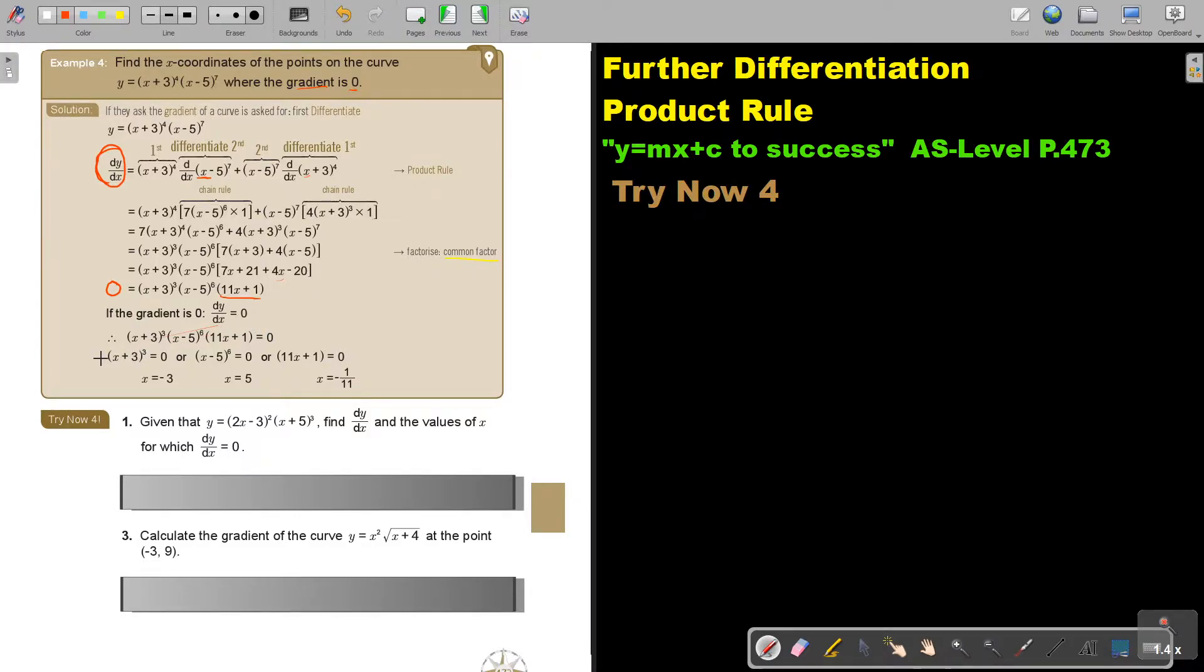If I want to get rid of the 3, I can just take the cube root. But at the end, I end up with x plus 3 equals 0. Then I'm just taking the 6 root. But at the end, x minus 5 is equal to 0. And then if I simplify this, I get x is minus 3, x is 5. And if I take this, negative 1, divide by 11, and that is my third answer.